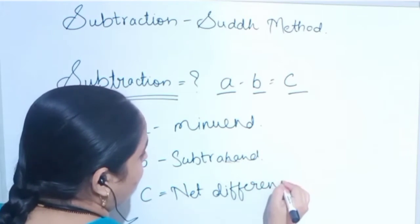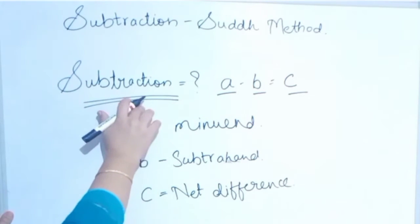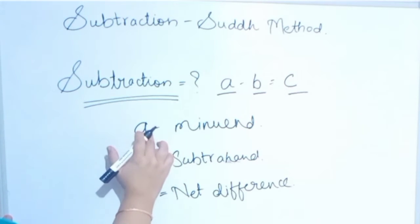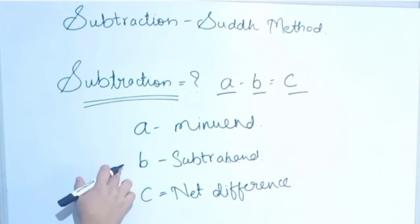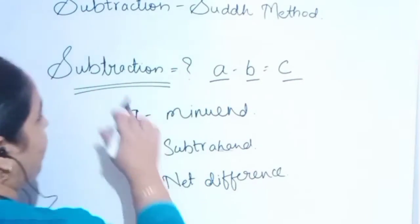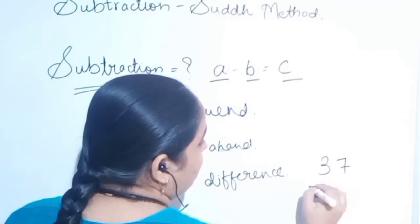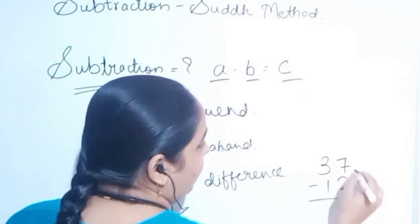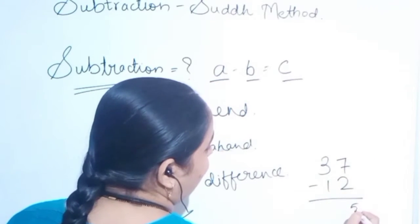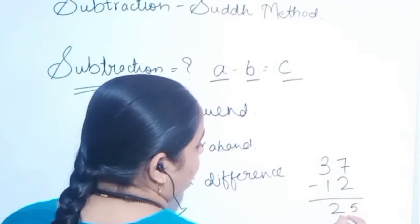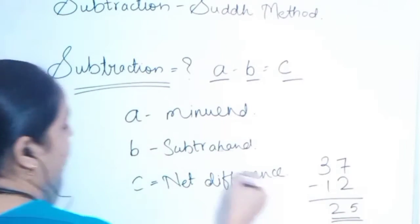Basically, subtraction means A minus B equals C, the net difference between two numbers. Now we will see how to implement in normal subtractions. If we say 37 minus 12, it's simple. 7 minus 2 is 5, 3 minus 1 is 2. This is the simple calculation.